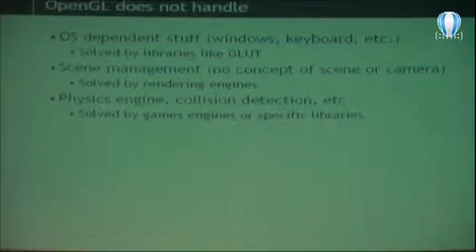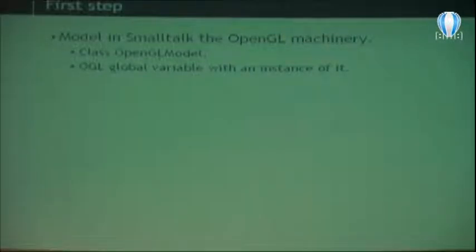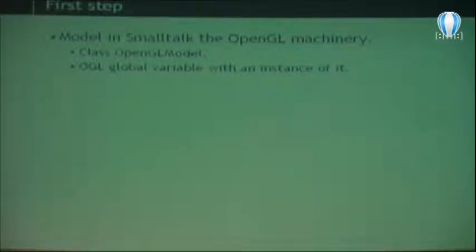What OpenGL doesn't handle: since it is platform-independent, it doesn't handle things like creating windows and handling the keyboard at low level — other libraries like GLUT take care of that. You also have no concept of what a scene is, because you don't even have objects — you're just sending commands to a state machine. There is no camera, no scene, nothing — just commands. That's why rendering engines appear. It also doesn't handle physics, collision detection, or sound.